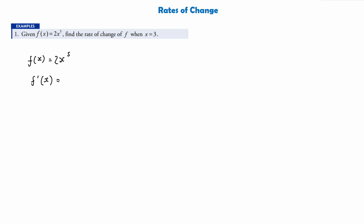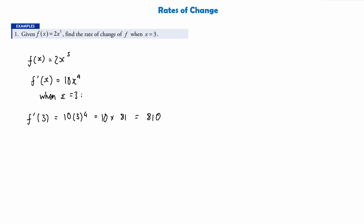So we just bring the power down to the front and multiply it by any constants — we get 10 — then subtract 1 from the power to give us x⁴. Now we want to find the rate of change when x equals 3, so we substitute in: 10 times 3 to the power of 4. That's just 10 times 81, which gives us 810. We would say this is the rate of change of f when x equals 3.